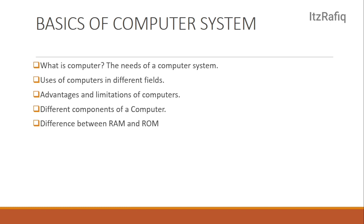Also see auxiliary memory — secondary memory and auxiliary memory are the same. After that, see the different types of magnetic and optical media. In magnetic storage: floppy disk, hard disk, magnetic tape. In optical: CD, DVD, and Blu-ray. Also see SSD — solid state drives — which are used in our mobile phones as memory cards. These are known as solid state drives, and you can read about them from the book.